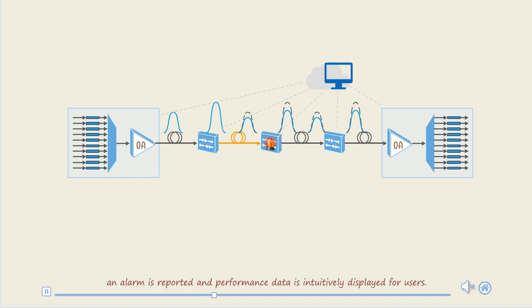At this time, an alarm is reported and the performance data is intuitively displayed for users. The OD function can optimize OCH trials in the case of abnormal performance data to ensure that the output optical power remains the same.